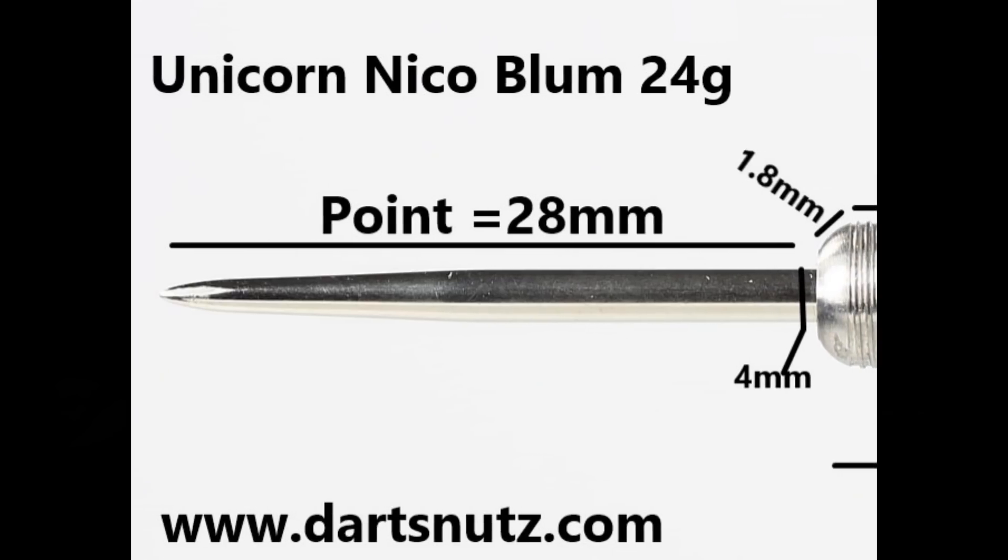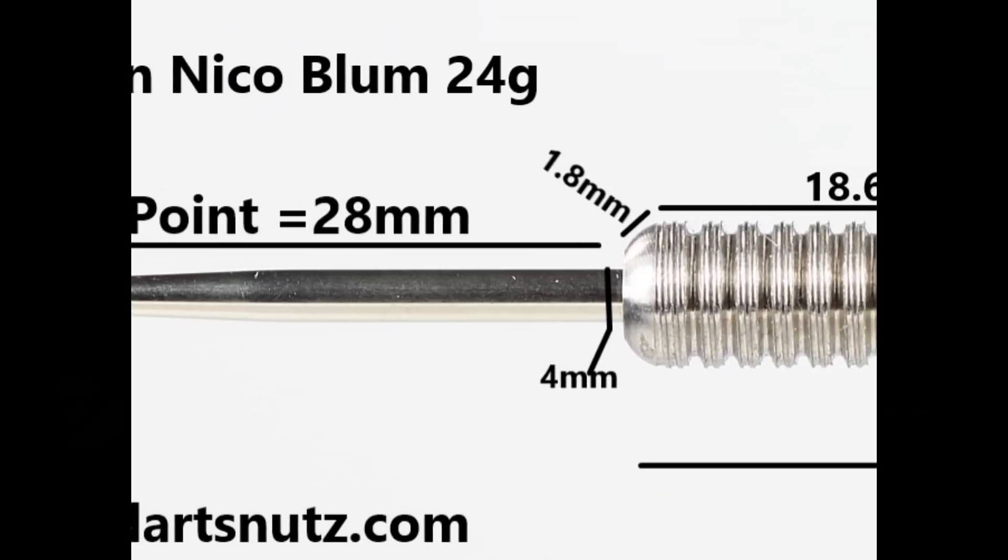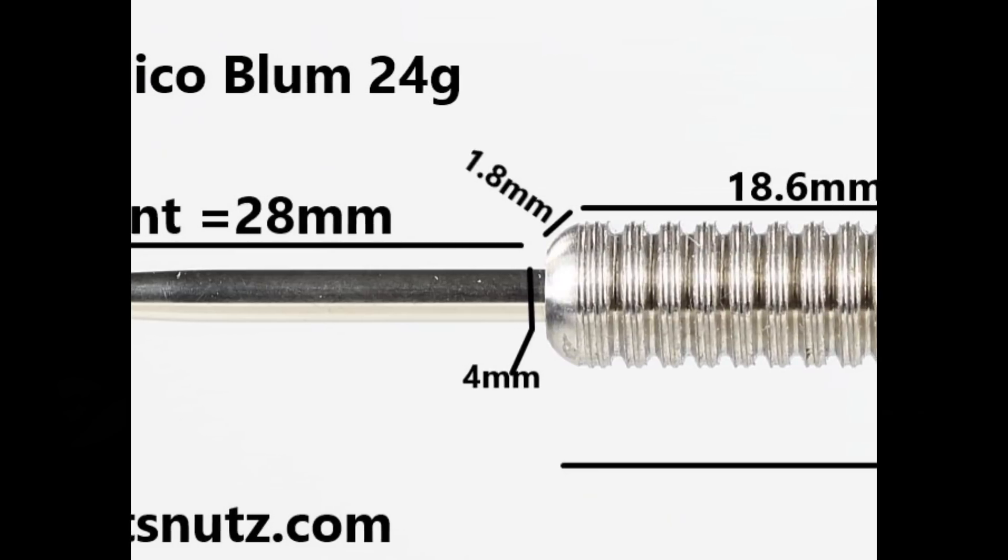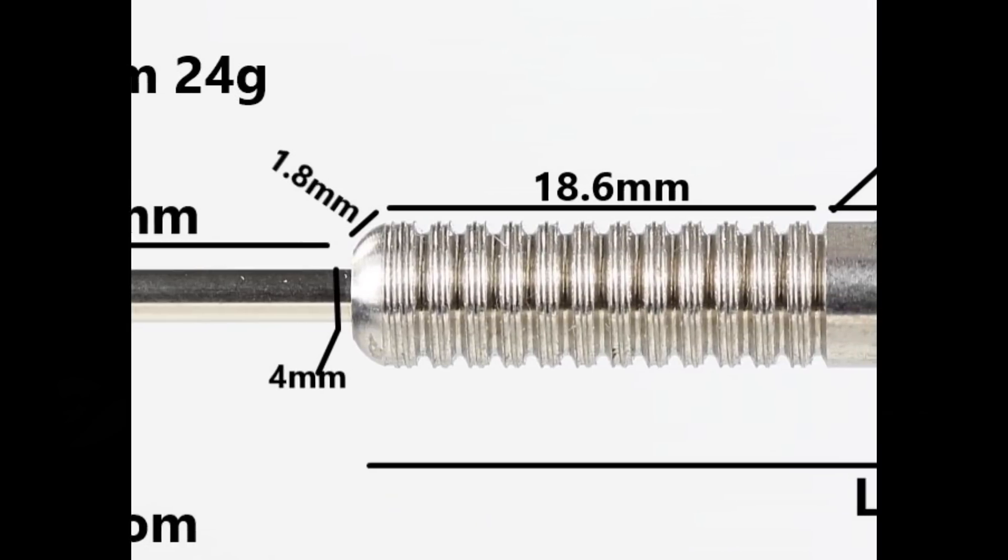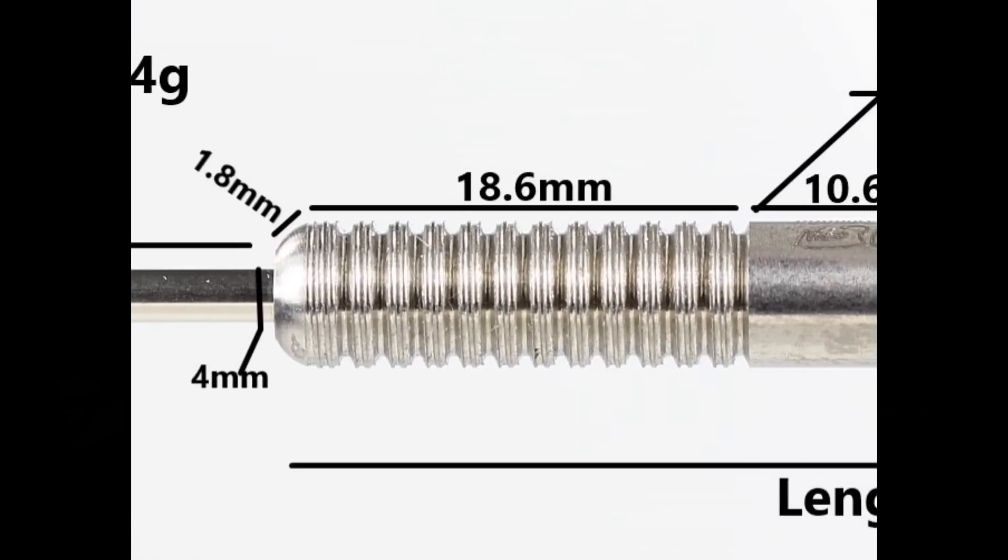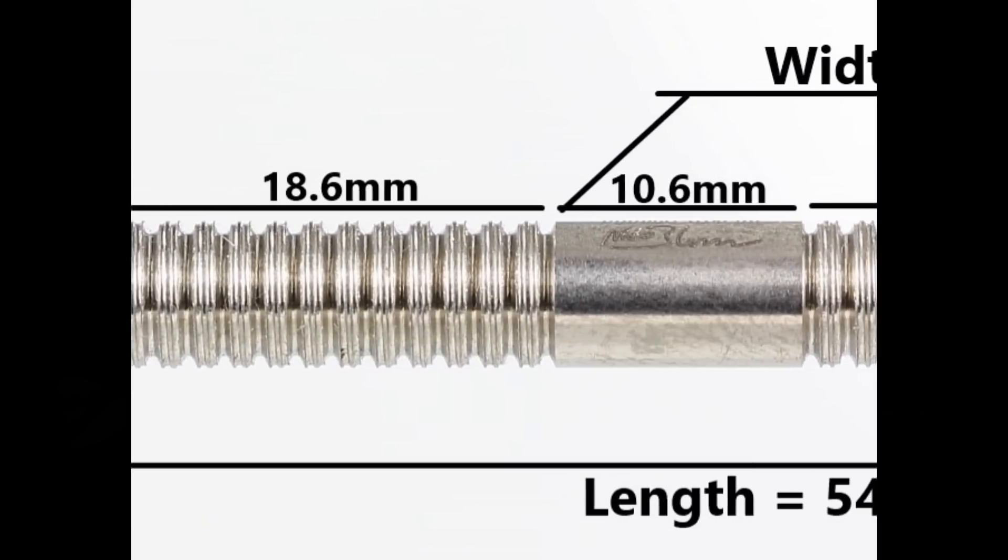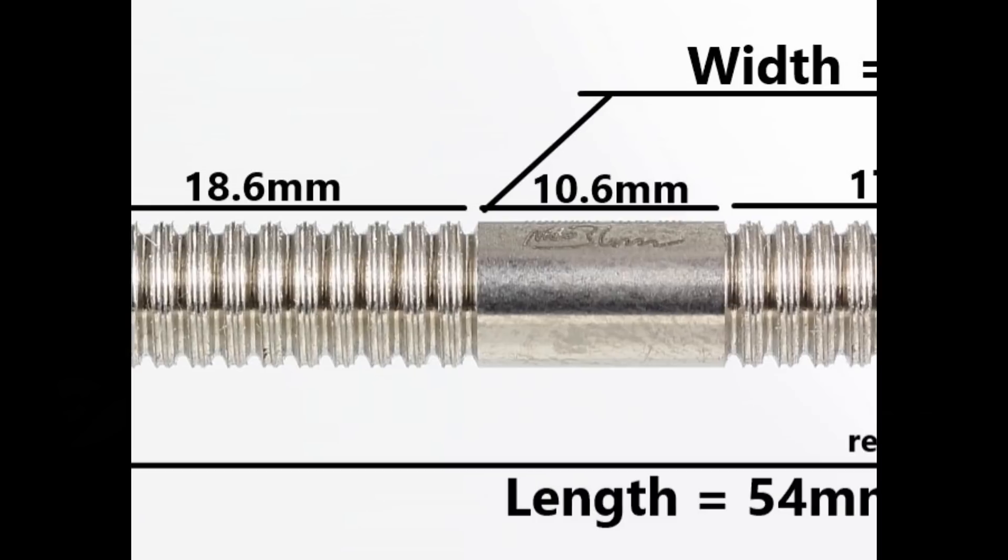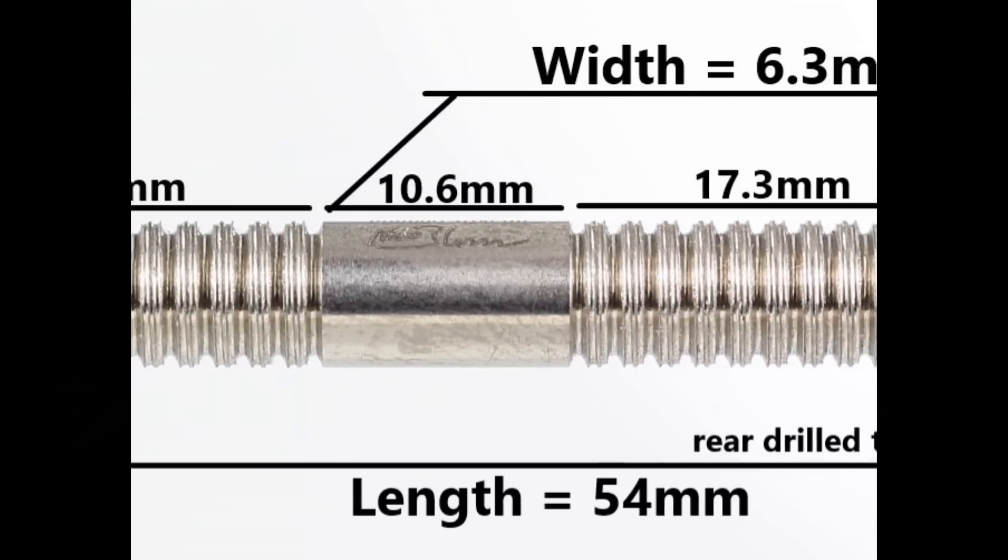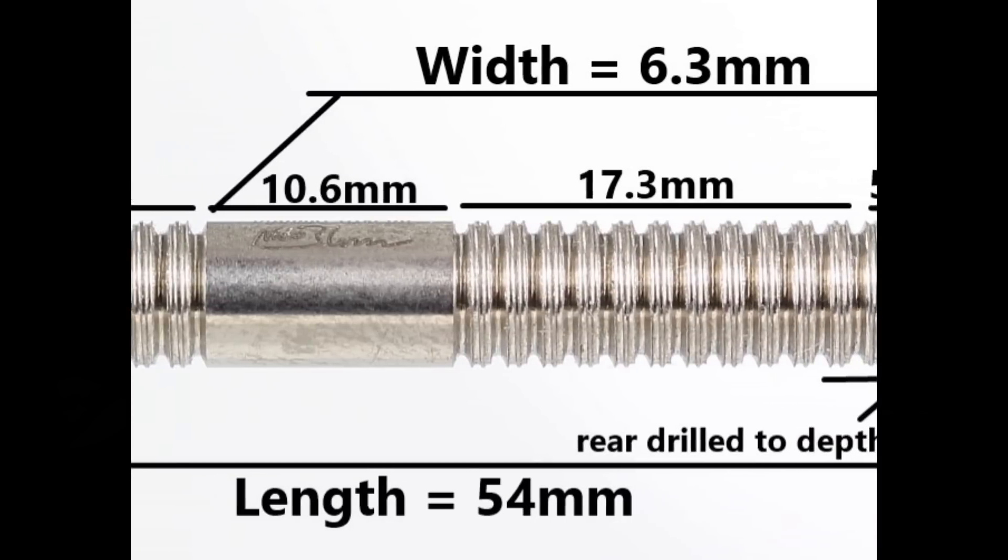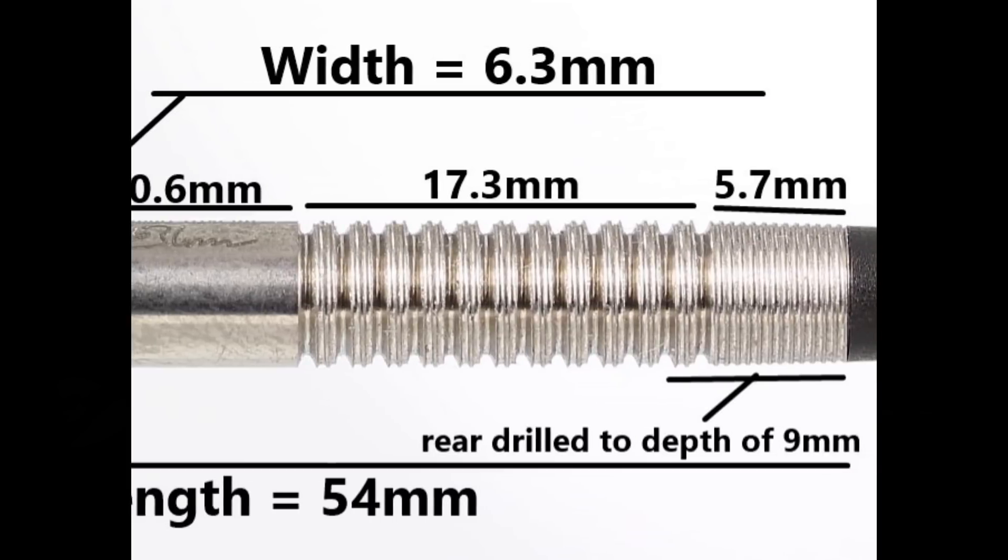It's fitted with a silver 28mm point, a square flat bull nose, and a smooth section at the front of 1.8mm before the ring grip section with micro style grip on top - that's 18.6mm. Then a smooth section in the middle of 10.6mm, then another ring grip section of 17.3mm, and the end of the barrel is the micro style grip at 5.7mm. Length is 54mm and width is 6.3mm.